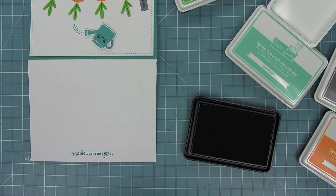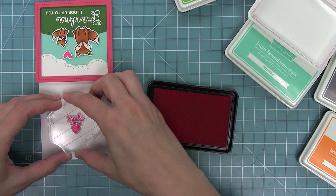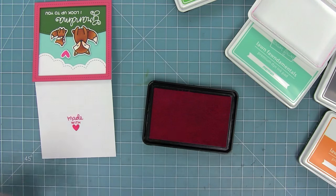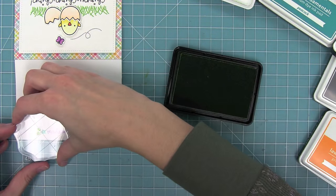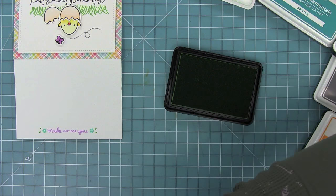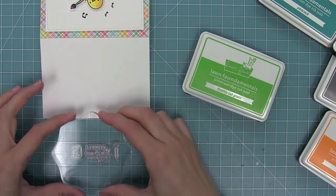You could just stamp a plain Made Just For You, or the Made With Love. That might be one of my favorite ones from this set. And then here I'm using a different version of the Made Just For You with different colors to coordinate with my set.